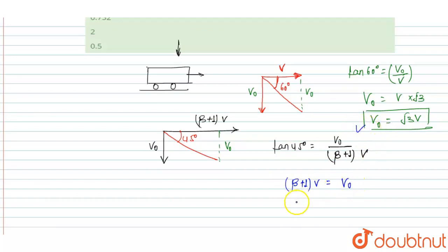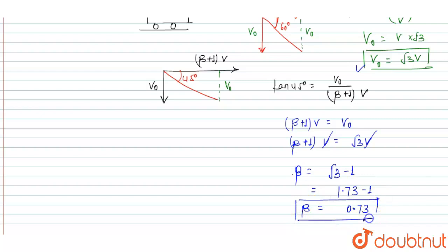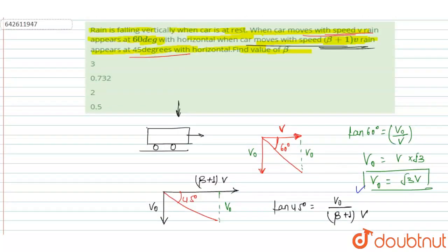The value of V0 = √3 · V. So (β + 1) × V = √3 · V. Cancelling V on both sides gives β + 1 = √3, therefore β = √3 − 1. The value of √3 is 1.73, so β = 1.73 − 1 = 0.73. Looking at the options, option B is the right answer.